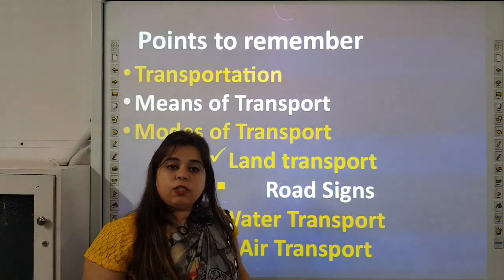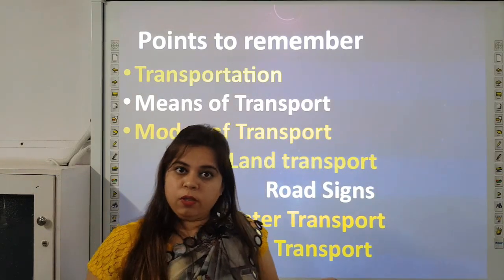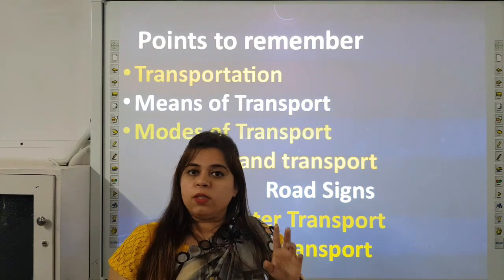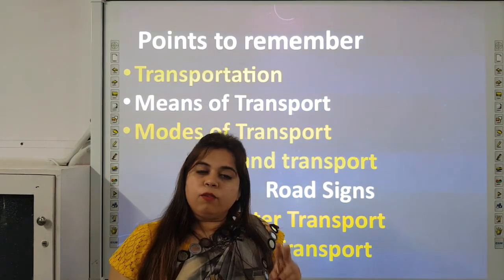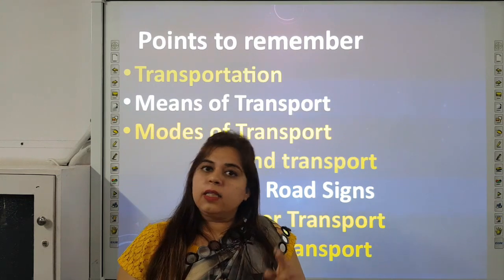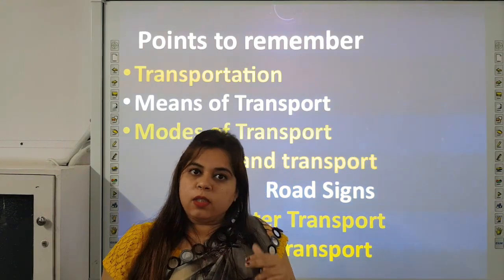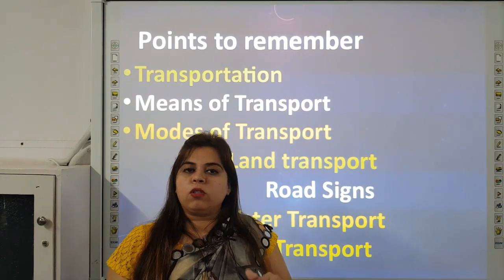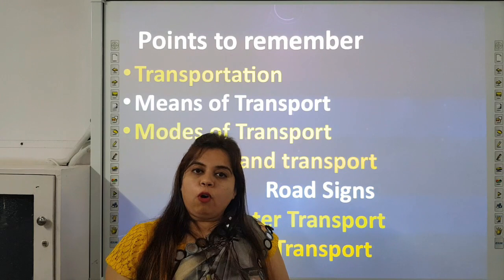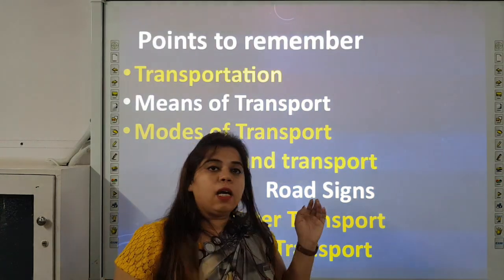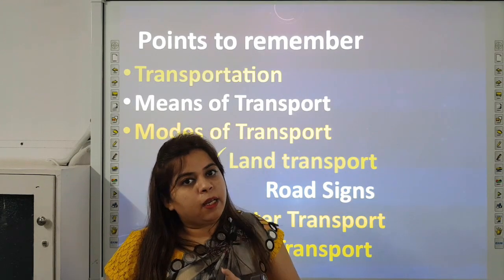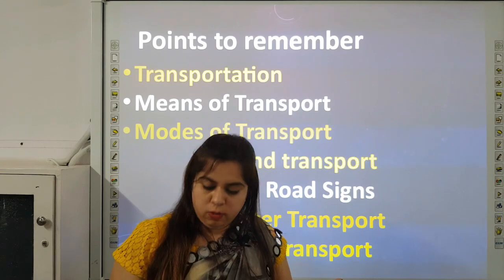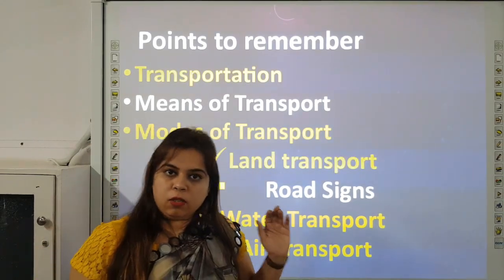Now, road signs. When we are travelling on road in a vehicle, we should always follow road signs. We should cross the road on zebra crossing. First look to the right, then to the left, and then to the right again. If there is no vehicle or a vehicle very far away, then only we should cross the road. We should follow traffic rules and road signs such as no parking, speed breaker ahead, school ahead, no right turn, no horn, and many more.